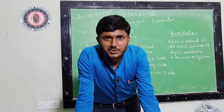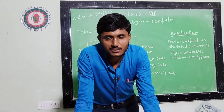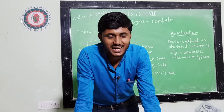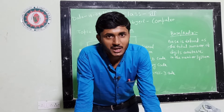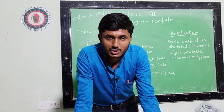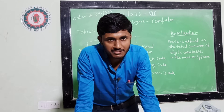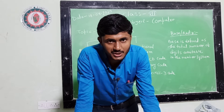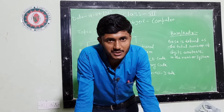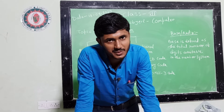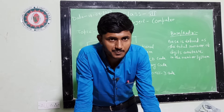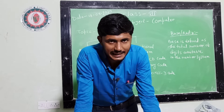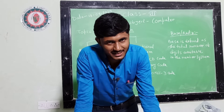Number system is basically divided into two types. The first one is positional number system and the next one is non-positional number system. Non-positional number systems include BCD code, grey code, excess-3 code, etc.